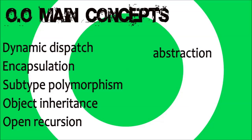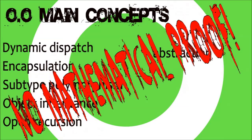The main concepts of OOP are dynamic dispatch — when a method is invoked on an object — encapsulation, in which case the state is kept separate, subtype polymorphism, object inheritance or delegation, and open recursion. In his 2003 book Concepts in Programming Languages, John C. Mitchell identifies four main pillars: dynamic dispatch, abstraction, subtype polymorphism and inheritance. Michael Lee Scott, in Programming Languages Pragmatics, considers only encapsulation, inheritance and dynamic dispatch. Surprisingly, we couldn't find any mathematical proof that bases object-oriented paradigm in any of those exclusively related pillars.